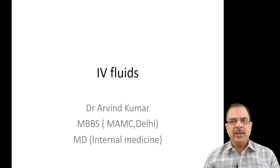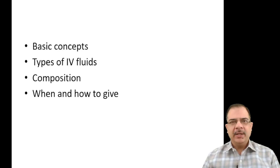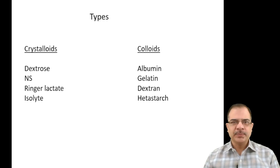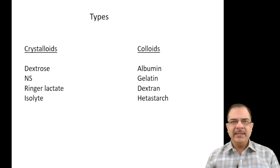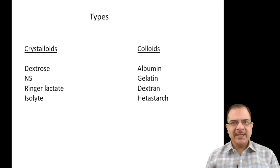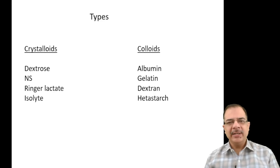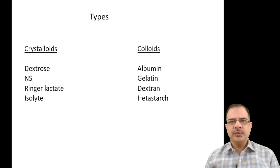This is an important topic especially for ward and admitted patients. In this video we will discuss basic concepts, types of IV fluids, their composition, and when and how to give them. IV fluids can be classified into crystalloids and colloids. Crystalloids are made up of electrolytes or dextrose — such as dextrose 5%, 10%, or 25%, hypotonic/hypertonic/isotonic saline, Ringer lactate, or Isolytes. Colloids include albumin, gelatin, dextran, and hetastarch.